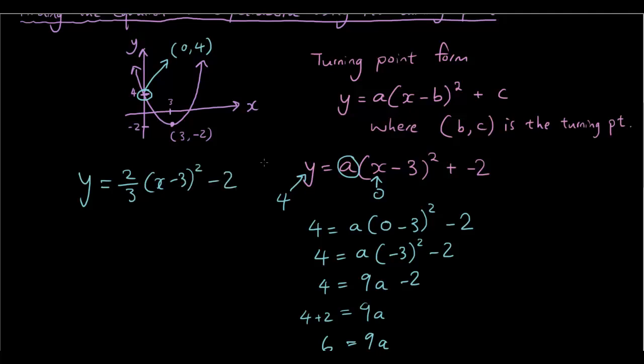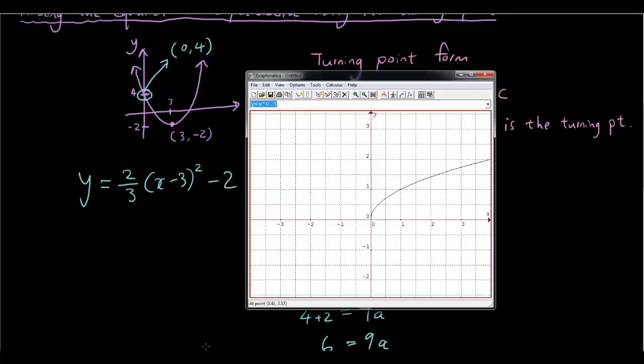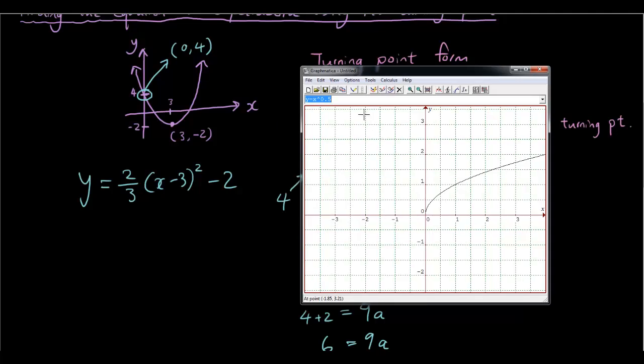And let's test that using graphmatica and see if it gives us the equation we want. So y equals 2 over 3 times x minus 3 squared minus 2.